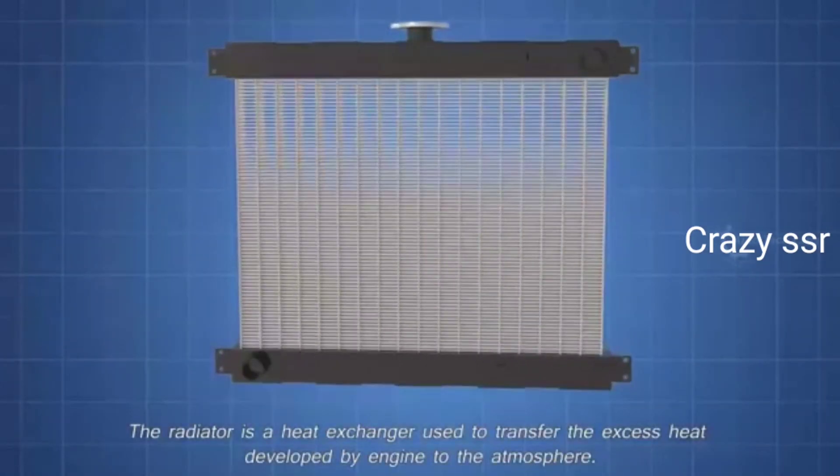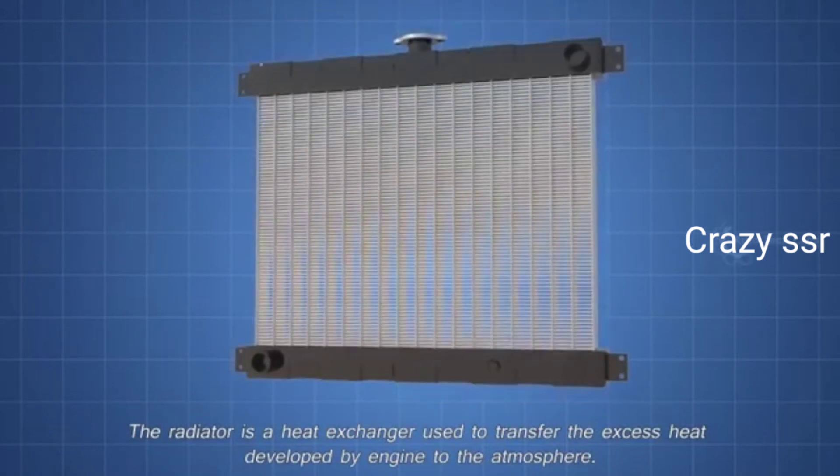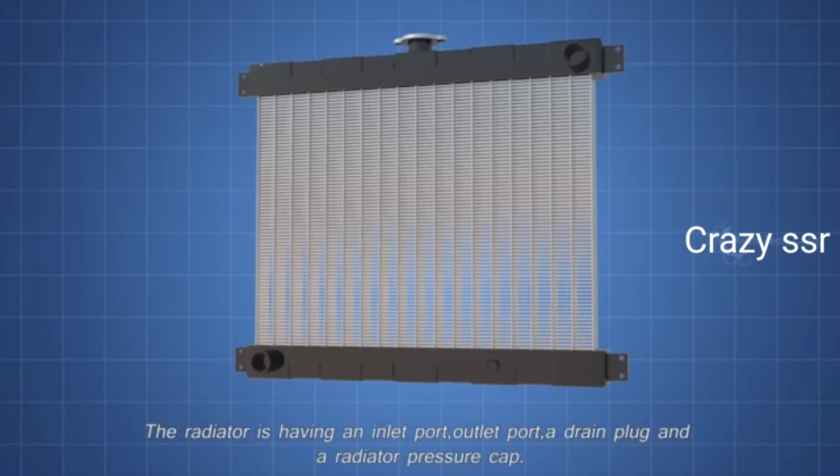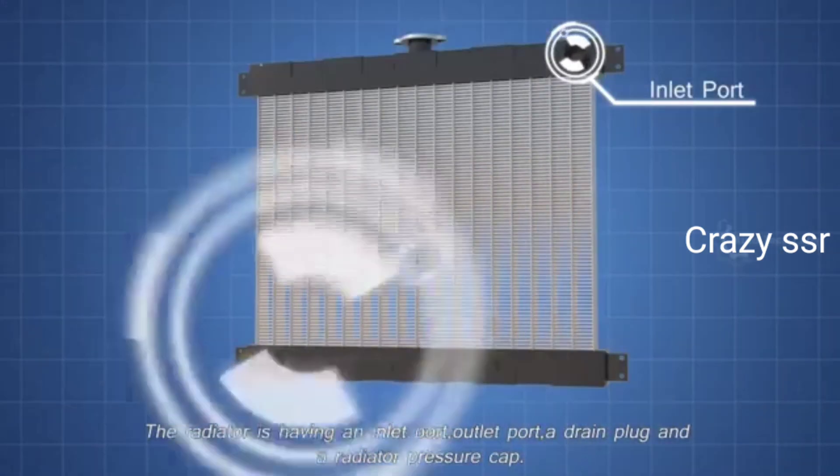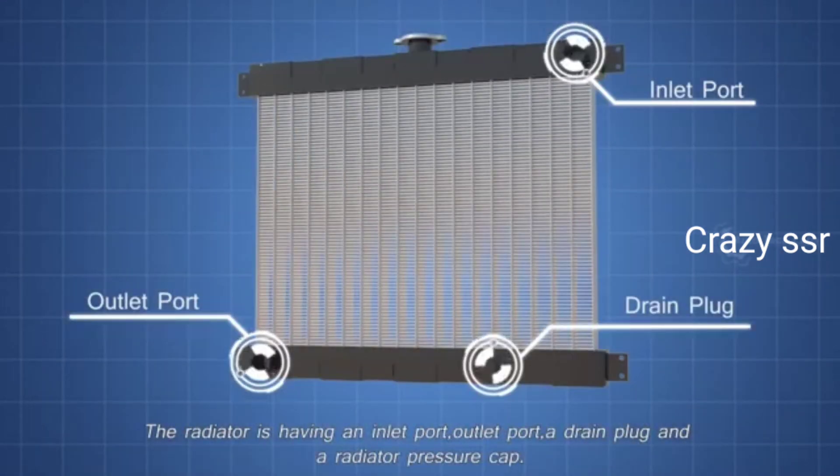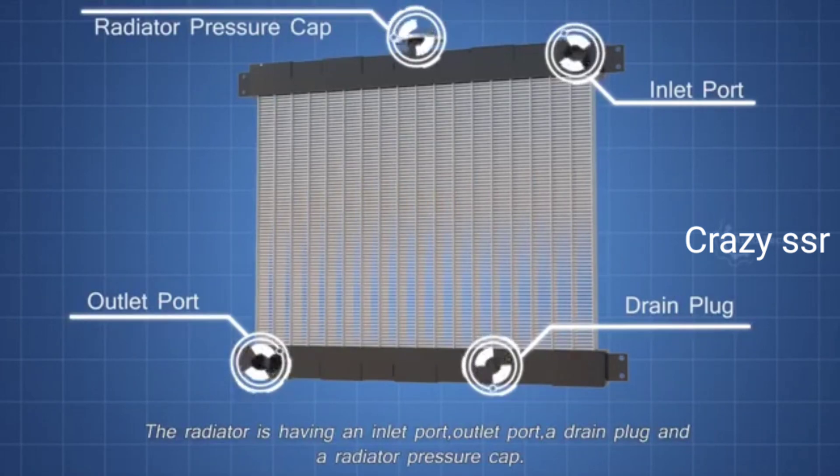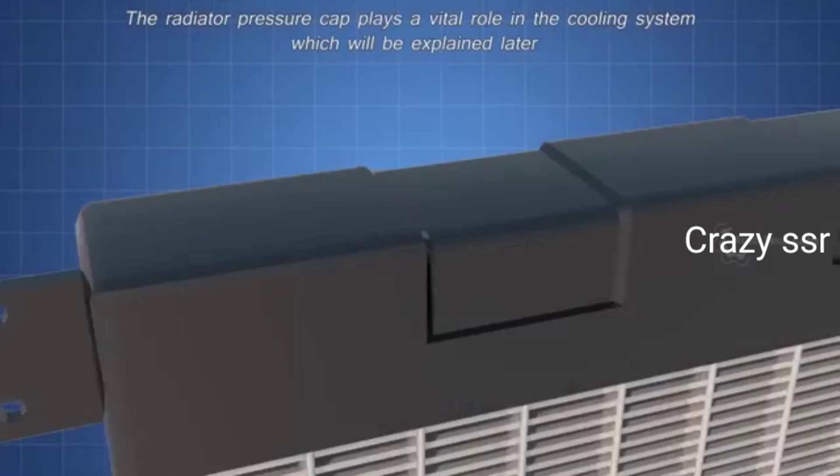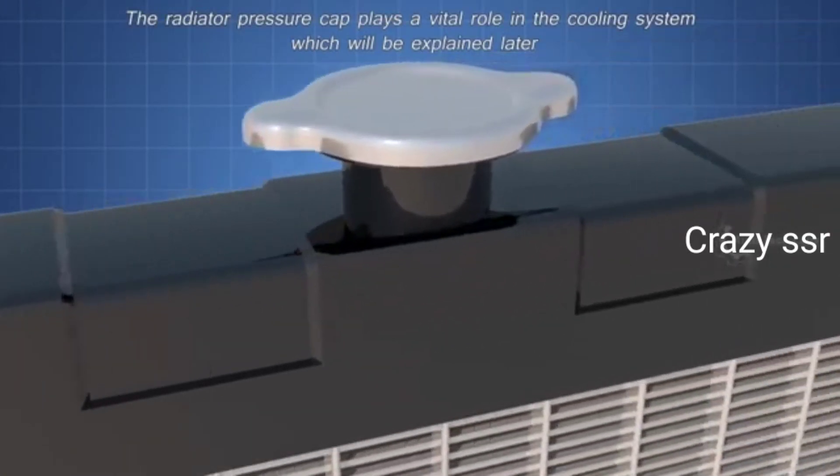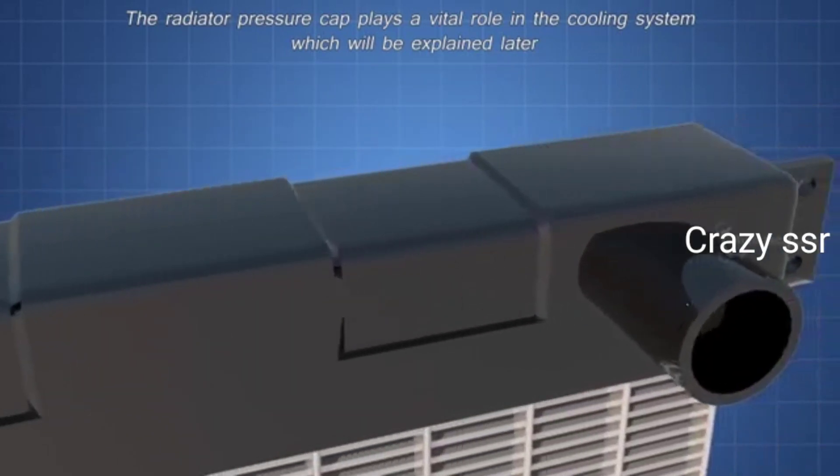Next, the radiator. The radiator is a heat exchanger used to transfer the excess heat developed by engine to the atmosphere. The radiator has an inlet port, outlet port, a drain plug, and a radiator pressure cap. The radiator pressure cap plays a vital role in the cooling system which will be explained later.